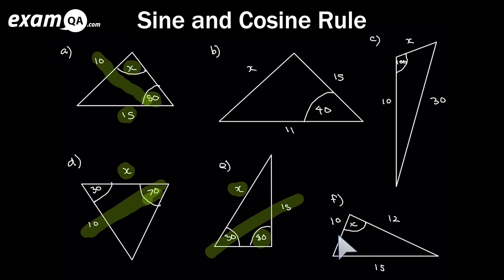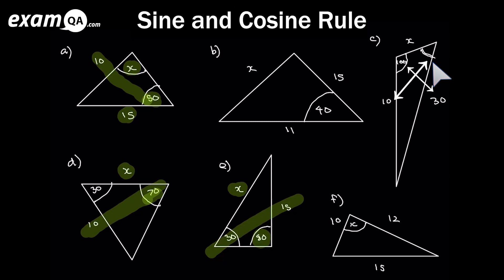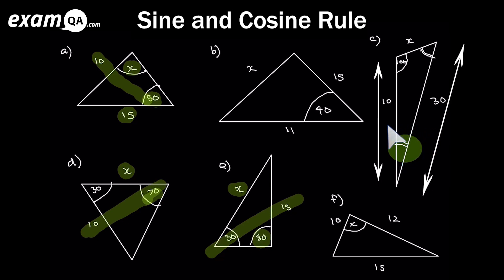Now back to triangle C. We can answer a different question first to make progress. We can use the sine rule to work out an unknown angle, since we have the full section with the 100 and the 30, and we know the side corresponding to that angle. Once we've worked out that angle, we can find the third angle using the fact that angles in a triangle add up to 180. Now we have scenario one of the cosine rule — an angle and two adjacent sides known — and we can work out side x. Alternatively, the sine rule could be used again.